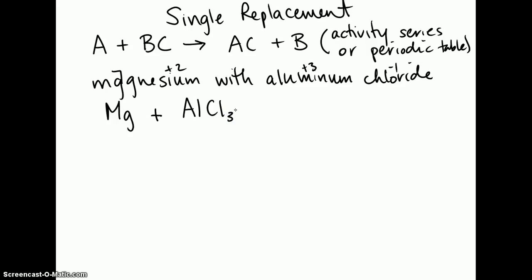So we'll write it as magnesium plus aluminum chloride with a subscript of 3 because you want to make certain that that equals zero. And if you look at your activity series, magnesium is in fact more reactive than aluminum. So for that reason, we will write MgCl2 plus Al.